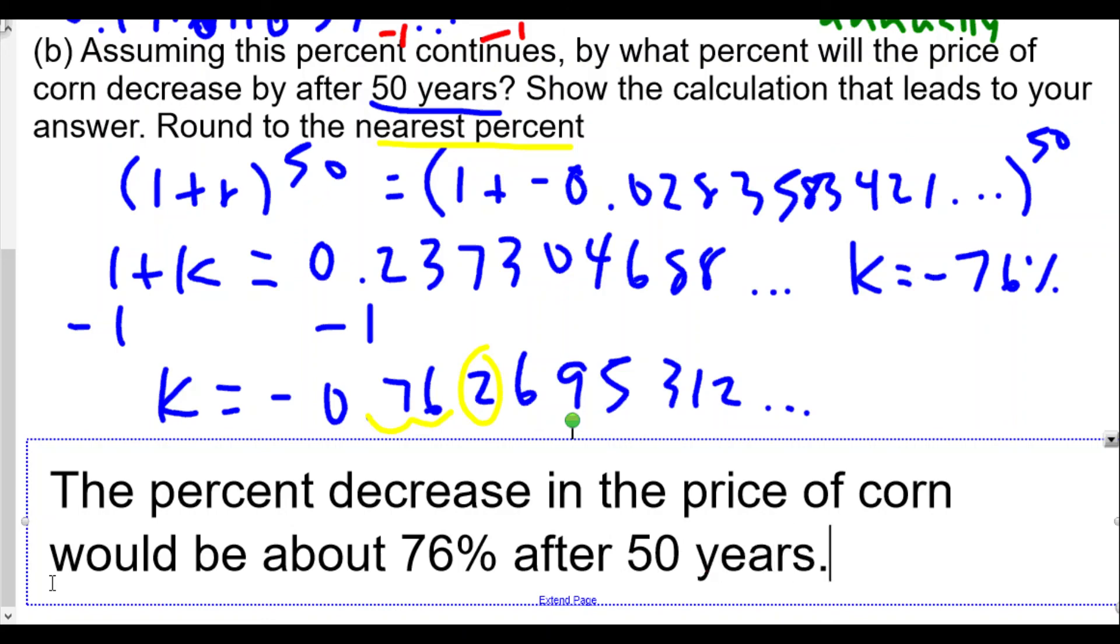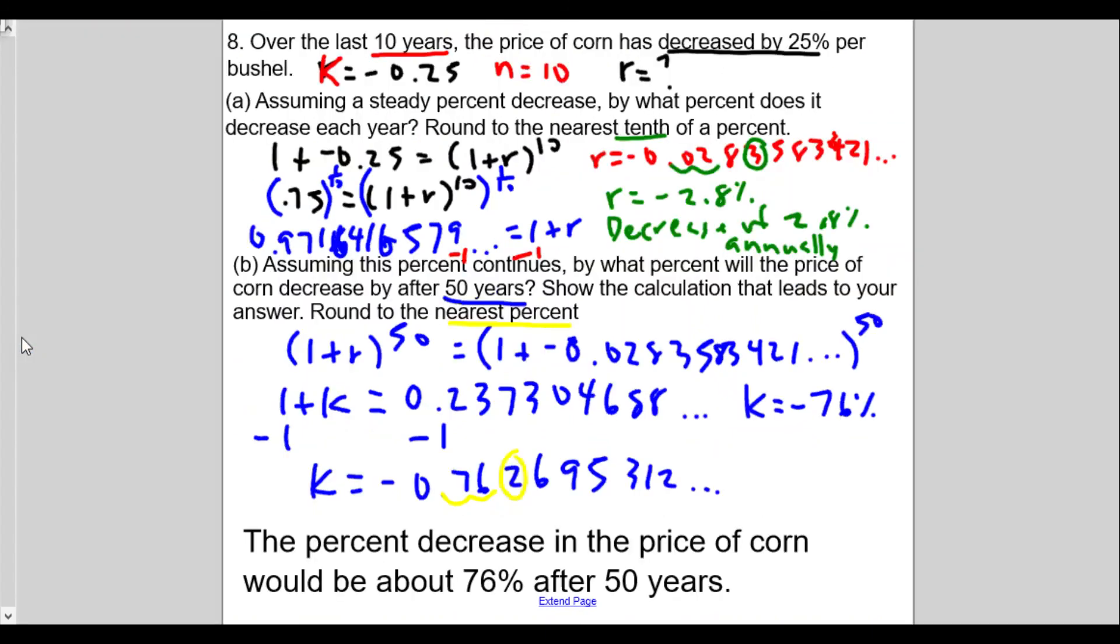So we see that here we're able to find out the annual rate of decrease and then see what impact that has, because we'll take that to the 50th power, and 1 minus that result will tell us the decrease value.